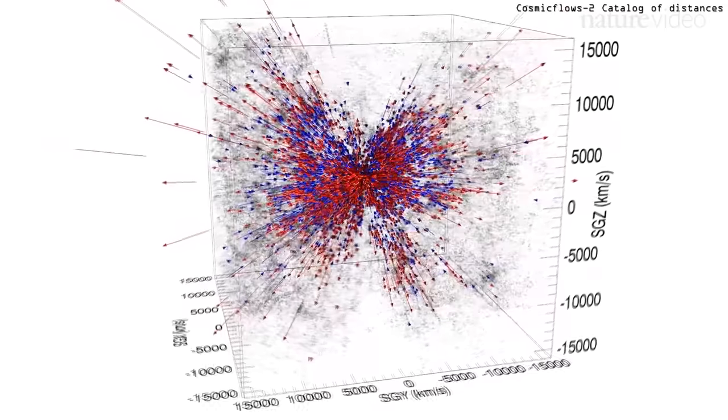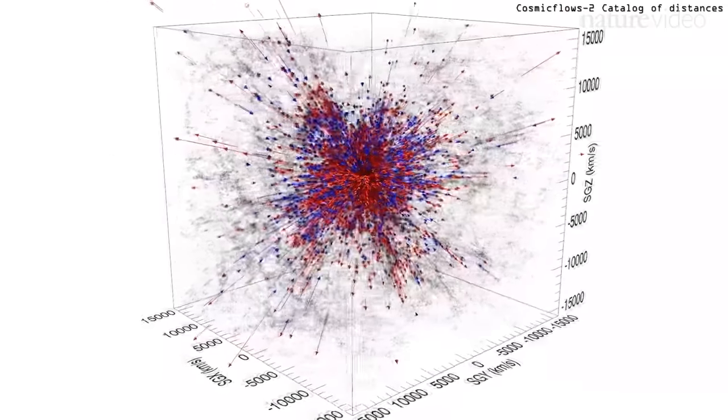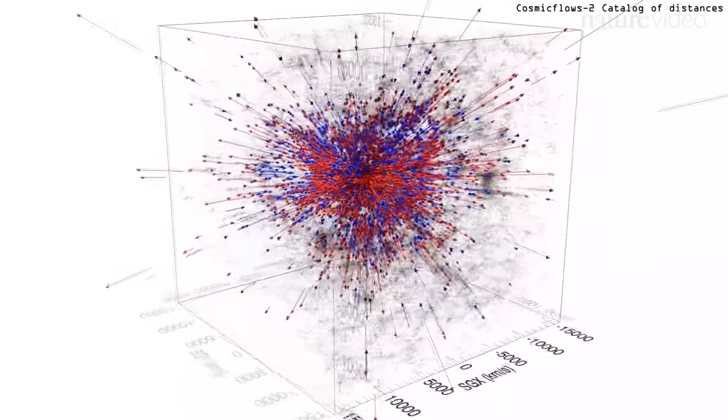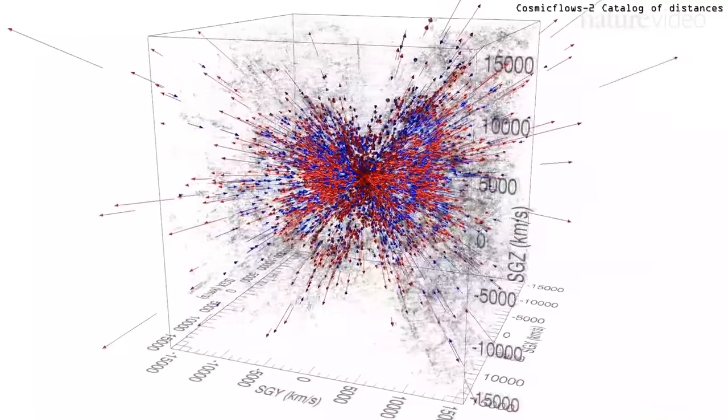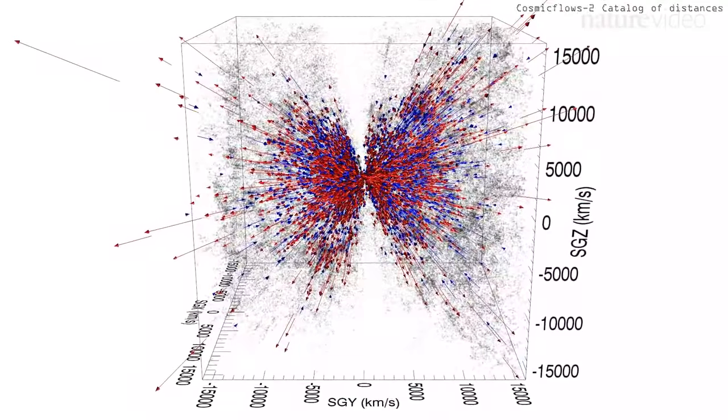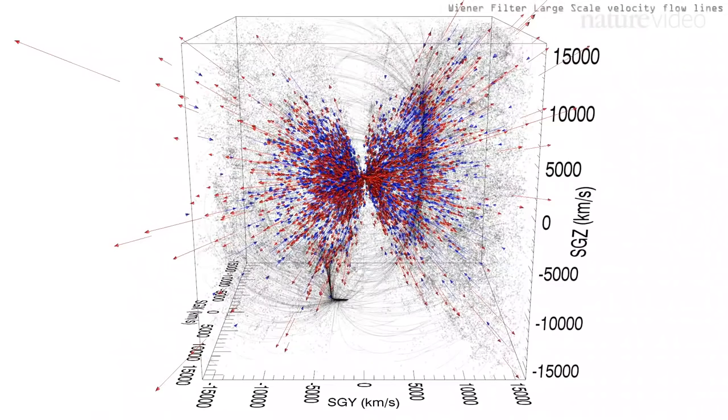With this data, they were able to create a map of the paths galaxies are migrating along. These paths are called cosmic flows. Using this motion, they came up with a new way to map the distribution of matter in the universe.